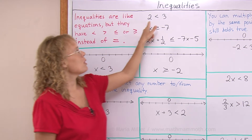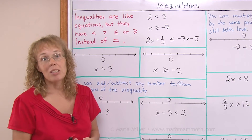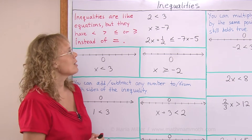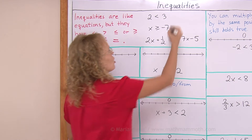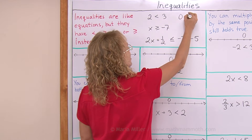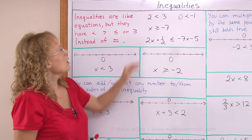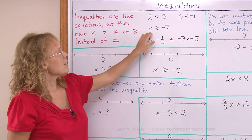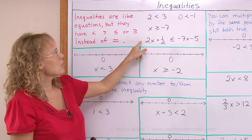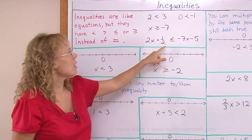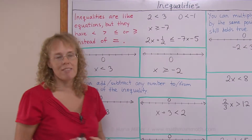For example, 2 is less than 3 — that's an inequality, and it is a true inequality. Of course you could write false inequalities too, such as 0 is less than negative 1 — that's not true. Then x is greater than or equal to negative 7. Or here's a more complex one: 2x plus one-half is less than or equal to negative 7x minus 5.